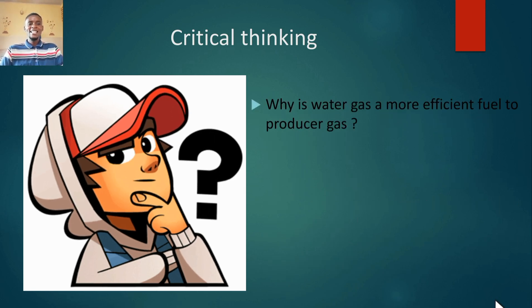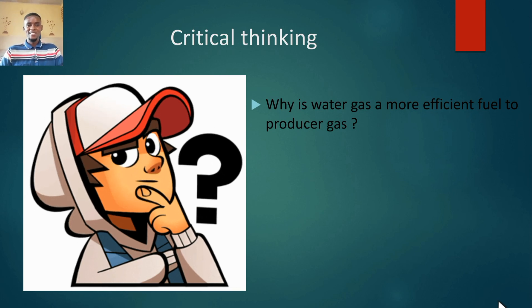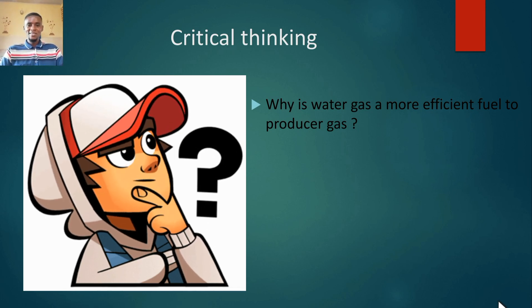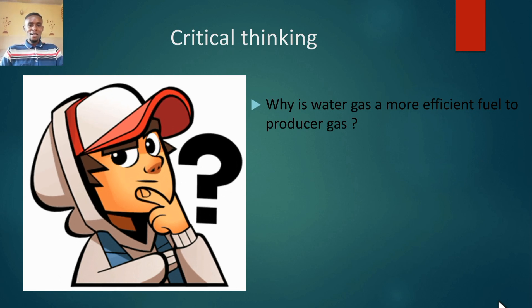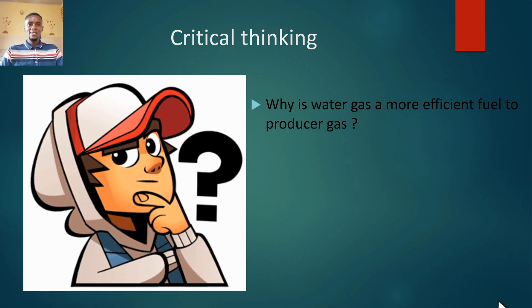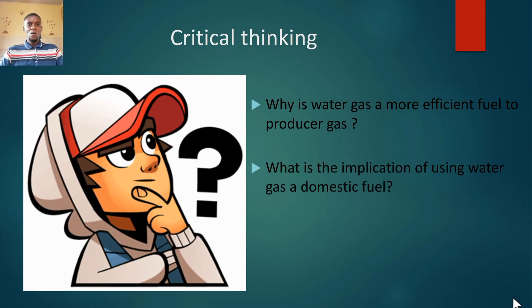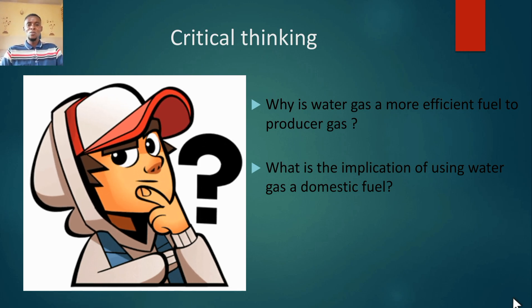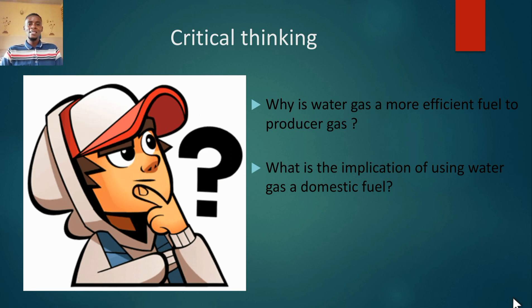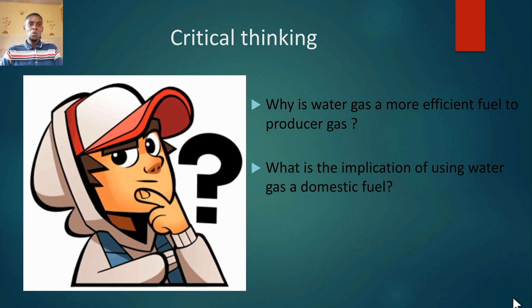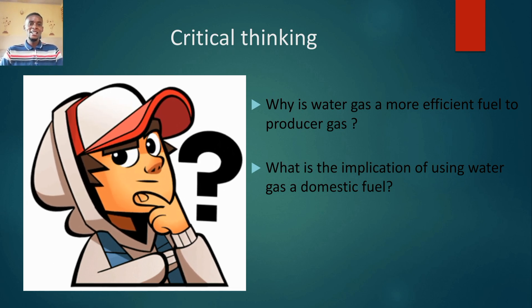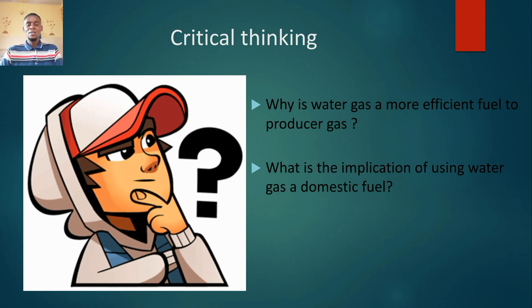Let's do some critical thinking. The first question is: why is water gas a more efficient fuel than producer gas? Pause the video, go back, look at the chemical equations, and think carefully. The second critical thinking question is: what is the implication of using water gas as a domestic fuel? We're told water gas cannot be used as a domestic fuel — so what would happen if you decided to use it? Go back to the video and work out the implication.